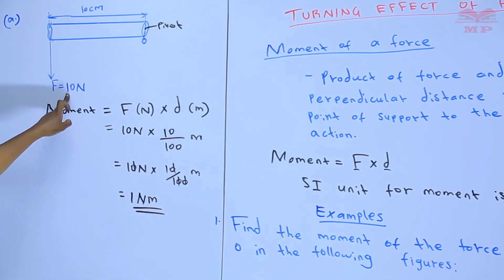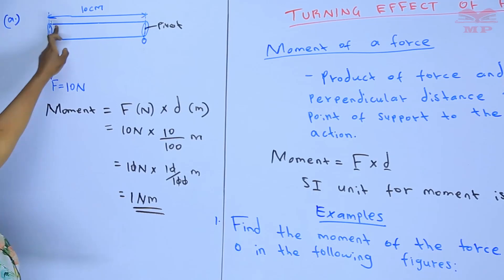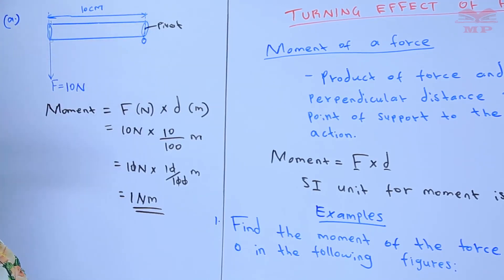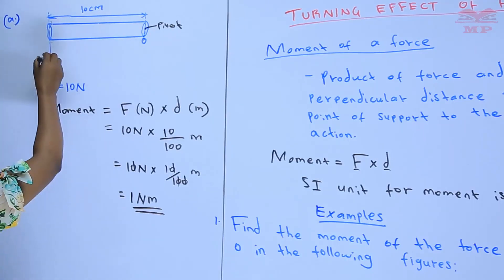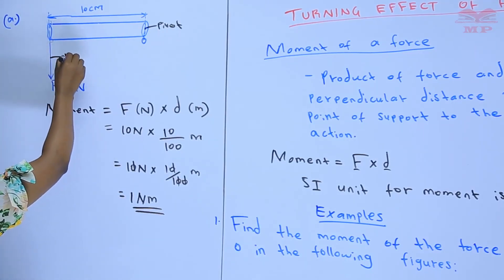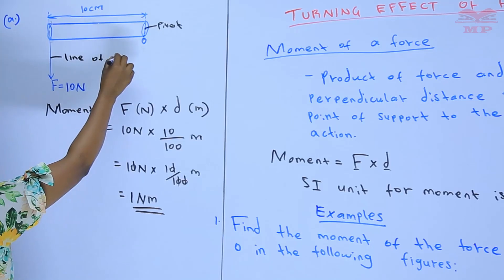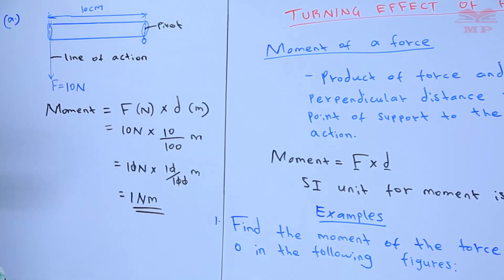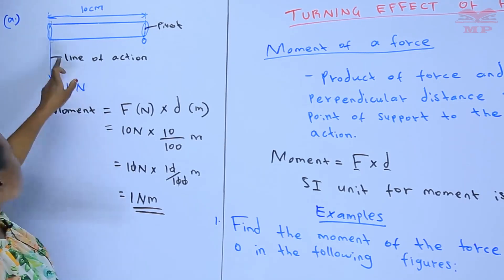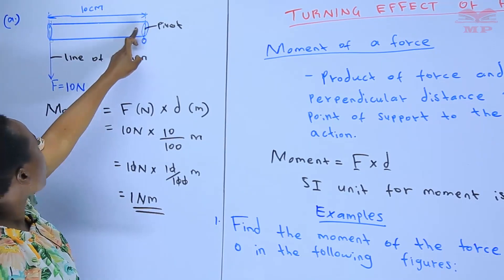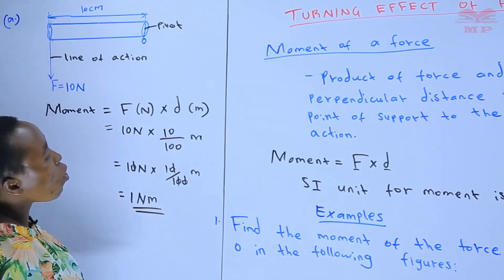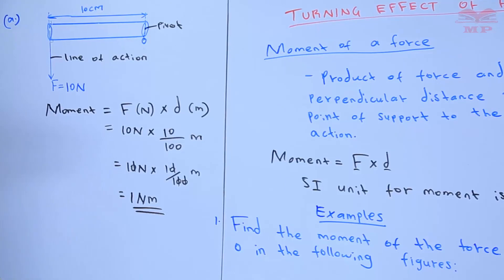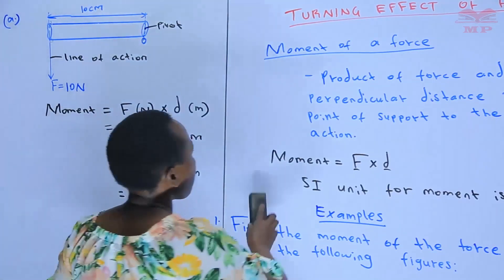We multiply the force by the perpendicular distance from the point of support to the line of action. The distance we use is the perpendicular distance, making an angle of 90 degrees.